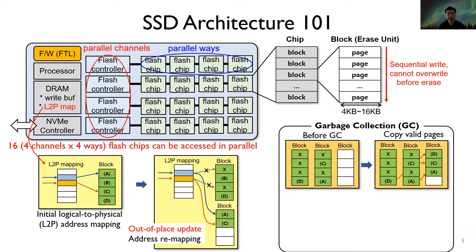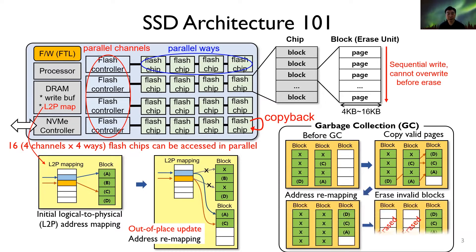If a page is copied within the same flash chip, the copyback operation can be utilized, which can move data quickly within a flash chip without host-to-device data transfers. Next, the addresses of the copied pages are remapped, then the victim flash blocks can be reused after being erased.